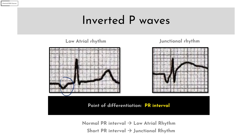If you have a short PR interval, that is suggestive of a junctional rhythm — as you can see here, it is around two small boxes. If you want to know the concepts behind inverted P waves, I have done a talk about it earlier; you can see a link to that talk here.